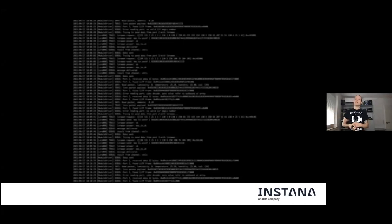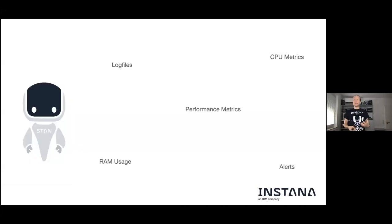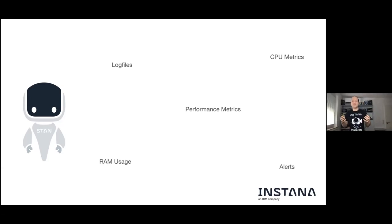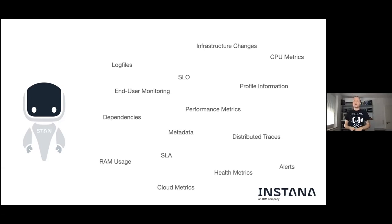So we had two basic things: metrics on one side — mostly infrastructure and host metrics — and log files on the other, mostly from engineering or from other technologies like databases. Now looking at the observability side, we still have CPU and performance metrics, RAM usage, and log files. We have alerts — if we know something is in a bad state, we can create alerts straight away and you don't need machine learning or AI to tell you that.